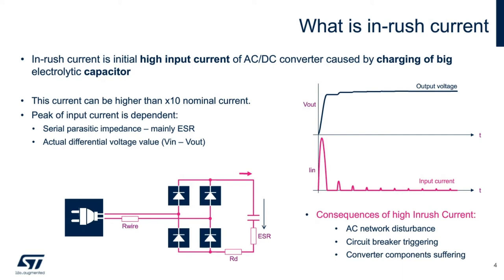The peak of this current is not only dependent on the size of the bulk capacitance of the supply, but also factors like parasitic impedances, size of the input filter components, and natural differential voltage from input voltage to output of the front-end. This can cause some substantial consequences if it is not controlled.